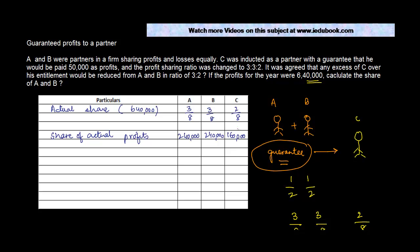C has received one hundred and sixty thousand, and his minimum guarantee was fifty thousand, so there is no problem — A and B do not need to give anything. But what would have happened if instead of fifty thousand the guarantee had been two hundred and fifty thousand?